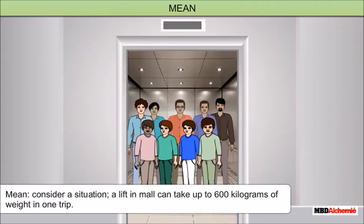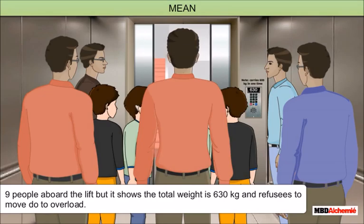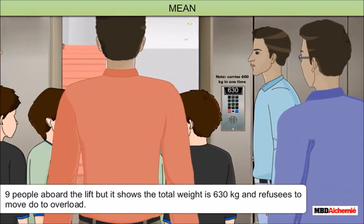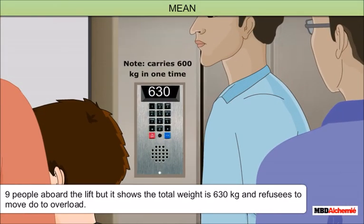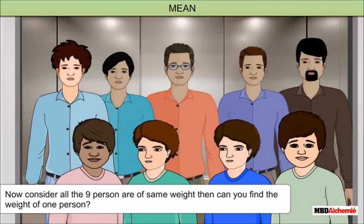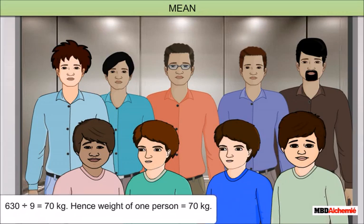Consider a situation: a lift in a mall can take up to 600 kilograms of weight in one trip. Nine people board the lift, but it shows the total weight is 630 kilograms and refuses to move due to overload. Now consider all nine persons are of the same weight. Then can you find the weight of one person? 630 divided by 9 equals 70 kilograms. Hence, the weight of one person is 70 kilograms.